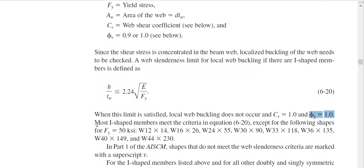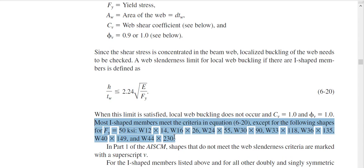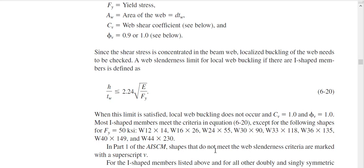This sentence will tell you. Most I-shaped members meet the criteria in equation 6-20, this equation, except for the following shapes. So these shapes, they do not satisfy this. Every other shape satisfies this. And how to find it in your AISC manual. If a section does not satisfy, there will be superscript of V. It means this is not satisfied.